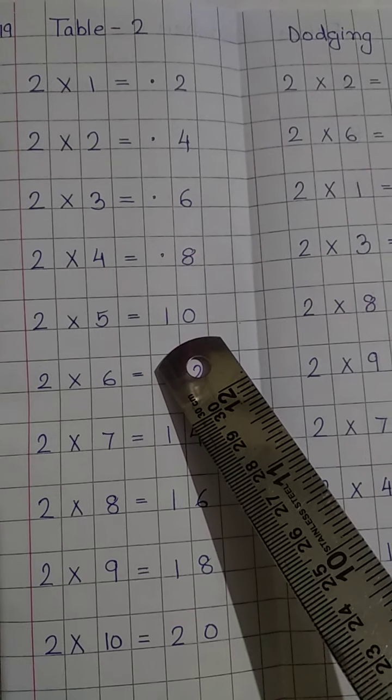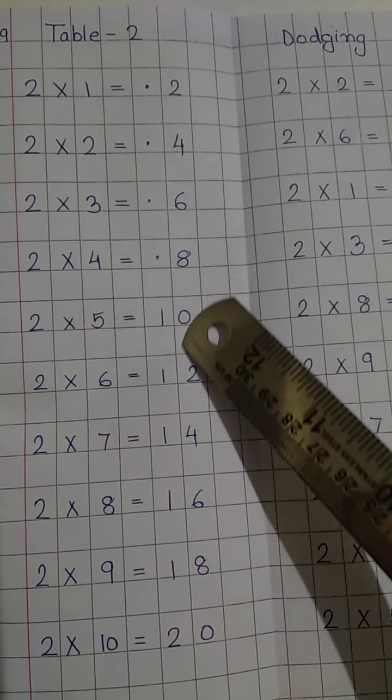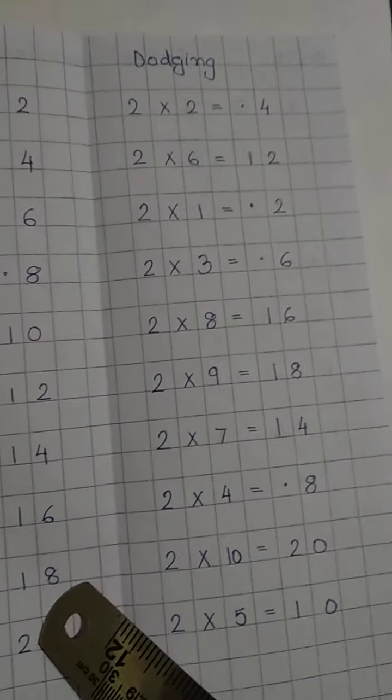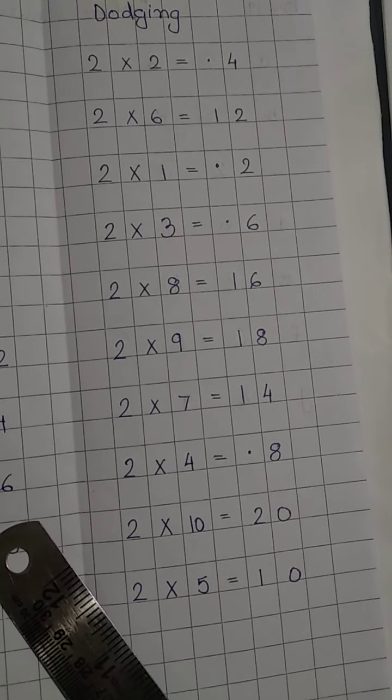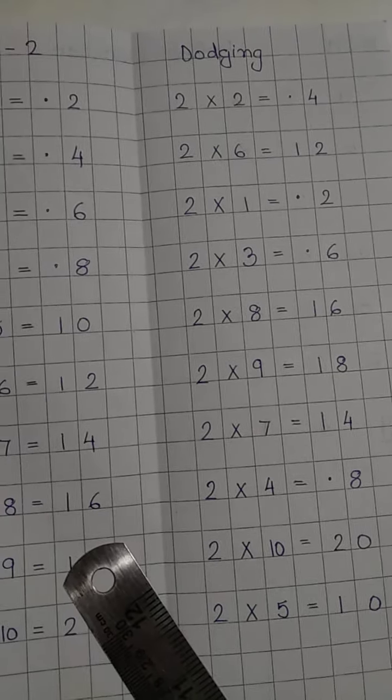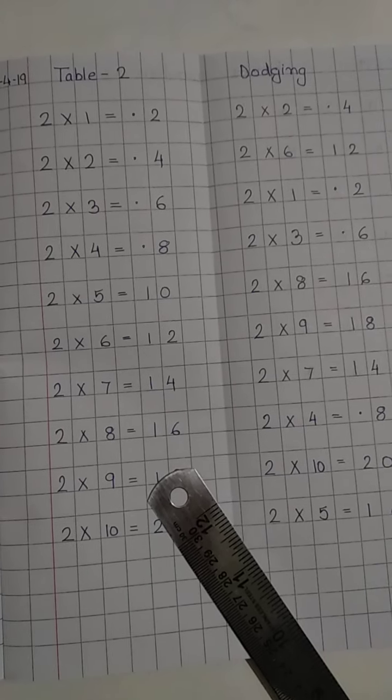Parents, please take care that the children copy the table in the same format. Same goes for the dodging table. These tables are written in random order. I am going to send you a picture of this. I hope you will not find any difficulty in copying down the same.